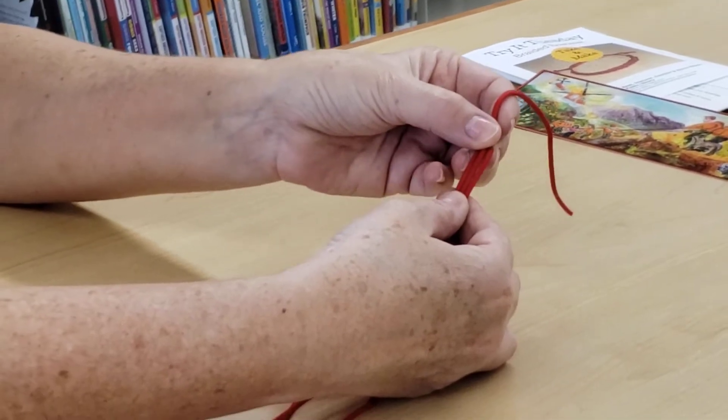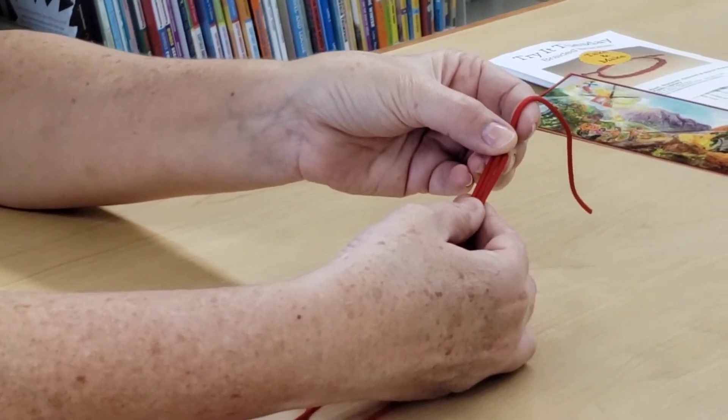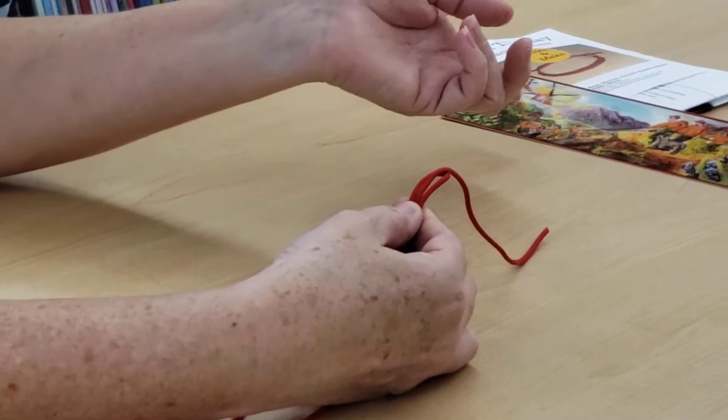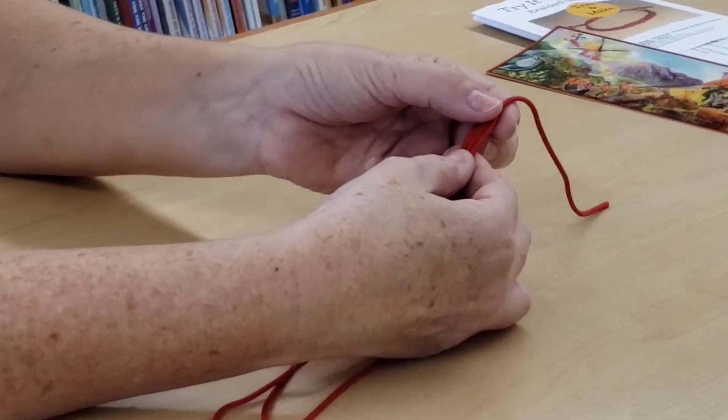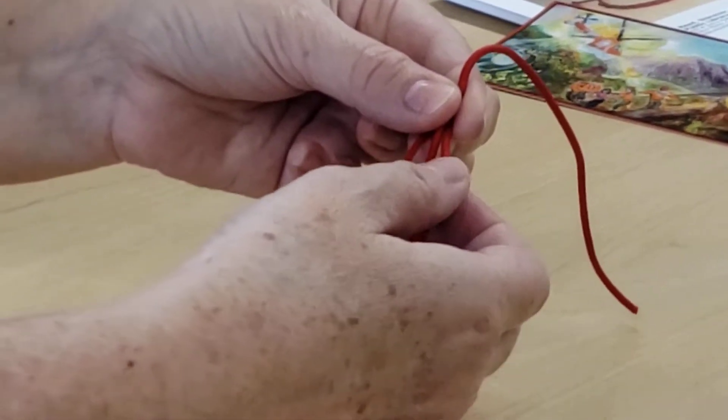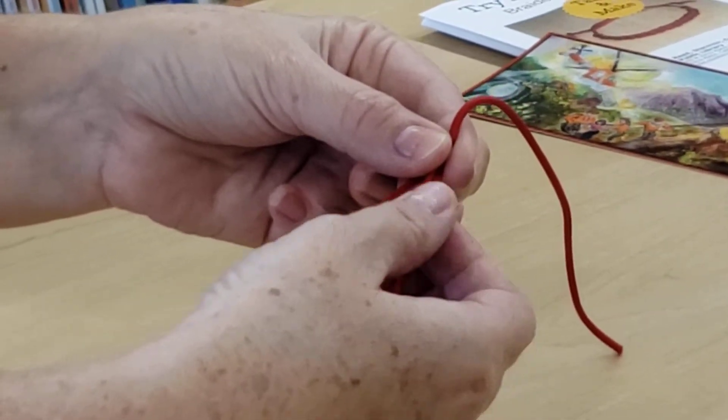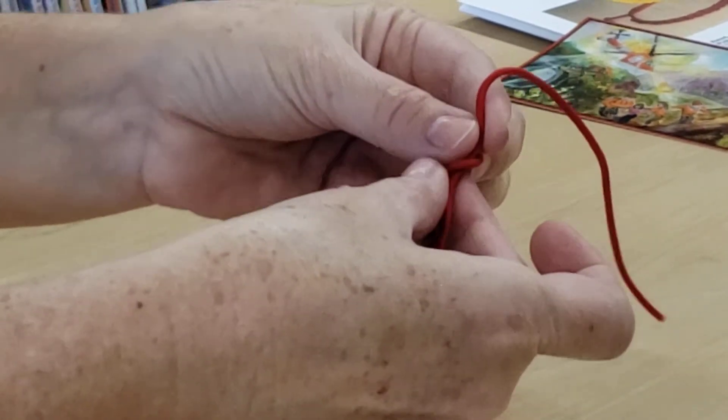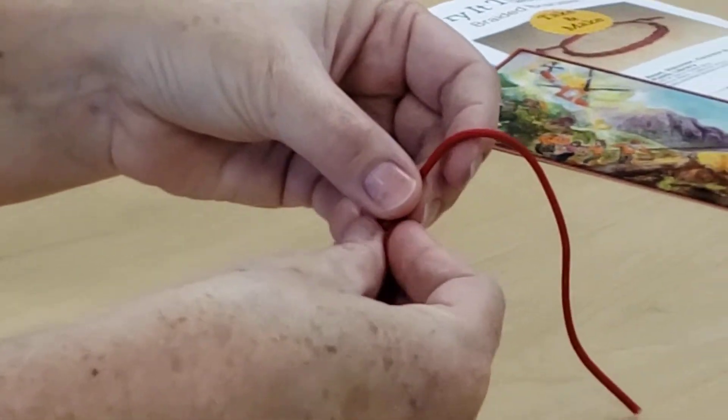And then you're gonna start braiding. And if you're not familiar with braiding, it's basically taking the piece from the outside and going to the center, and then the other side to the center. So we're gonna start with the right side, what's on the outside, and we're gonna go over the center and that piece is now going to become the center of the three.